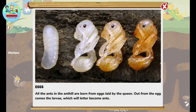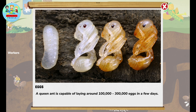All the ants in the ant hill are born from eggs laid by the queen. From the egg comes the larvae, which will later become ants. A queen ant is capable of laying around 100,000 to 300,000 eggs in a few days.